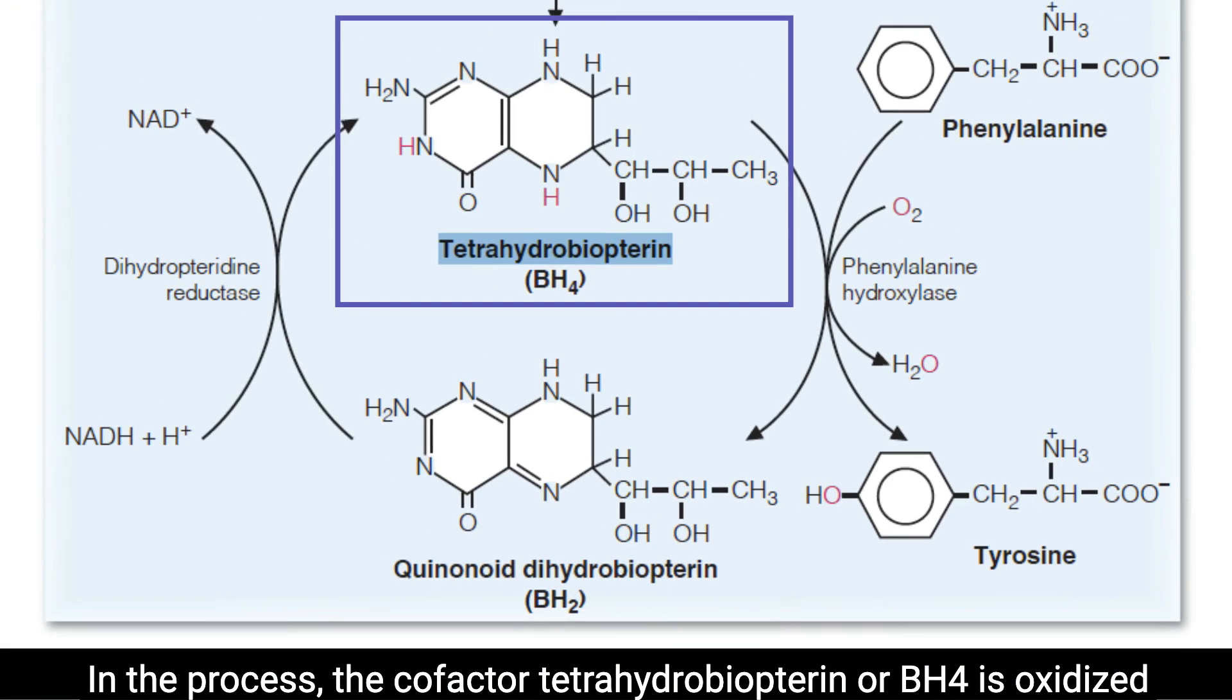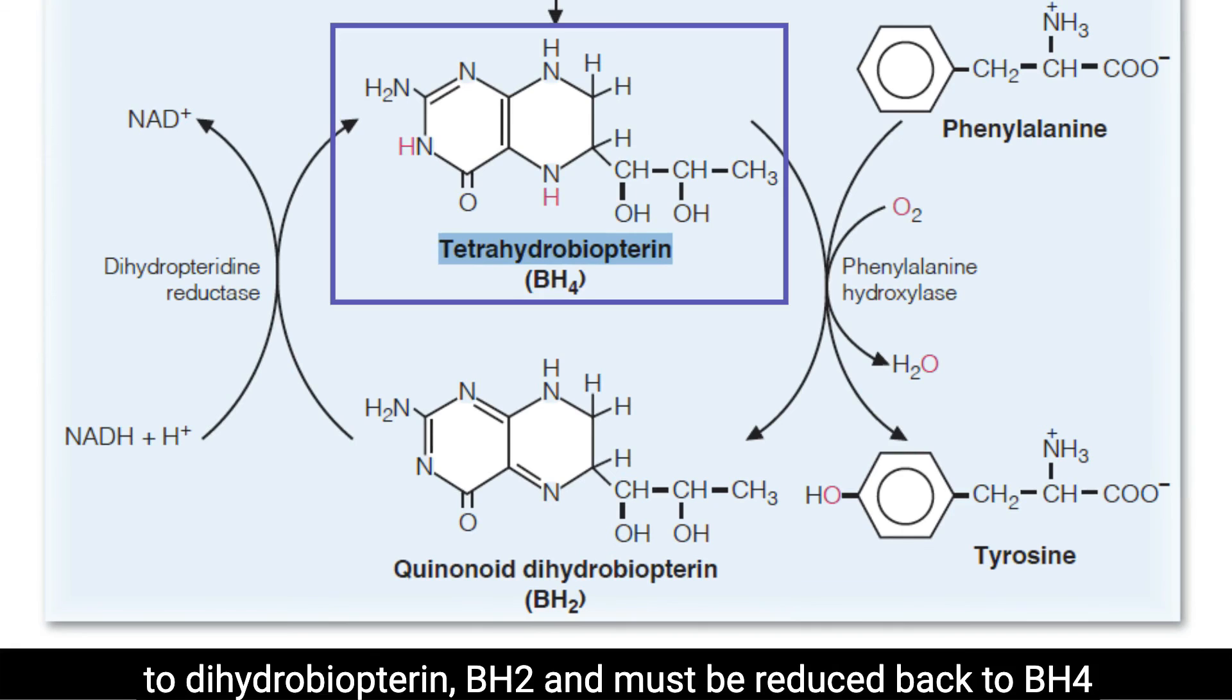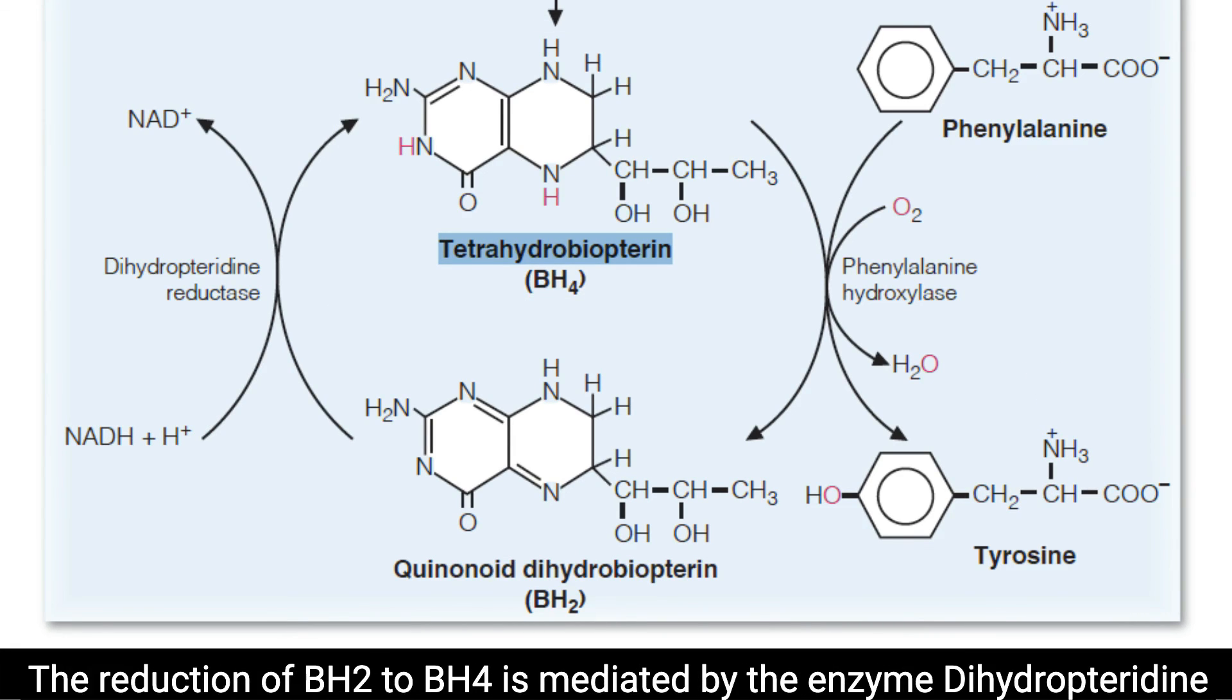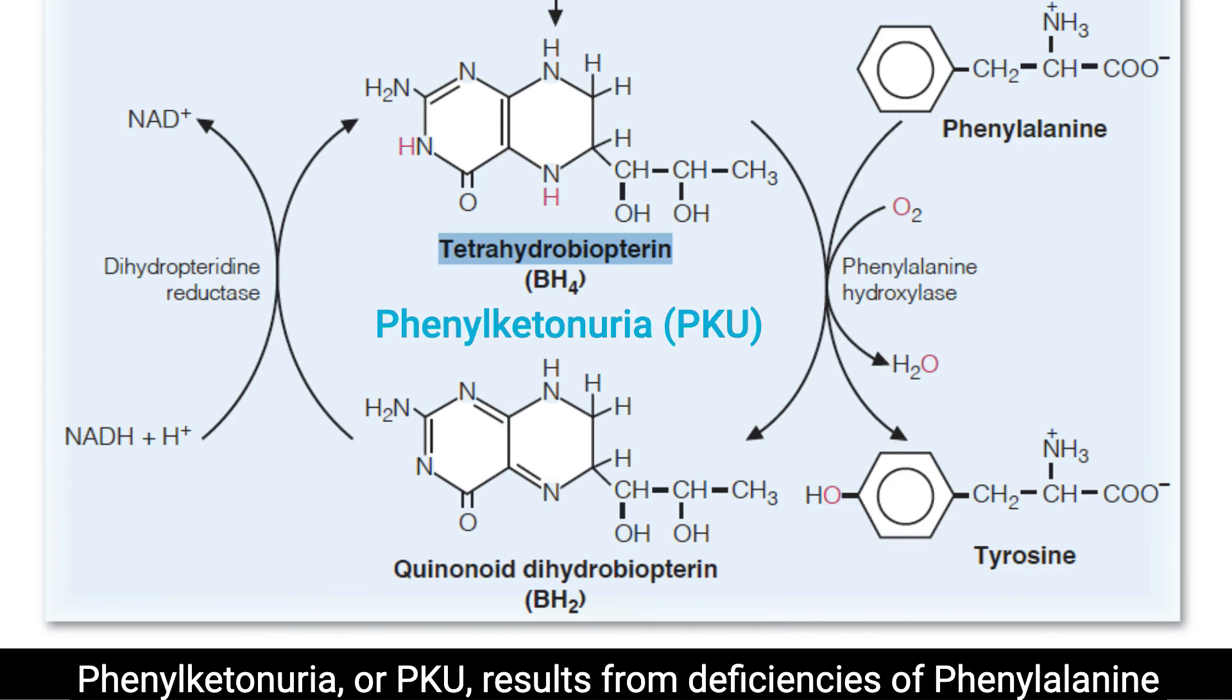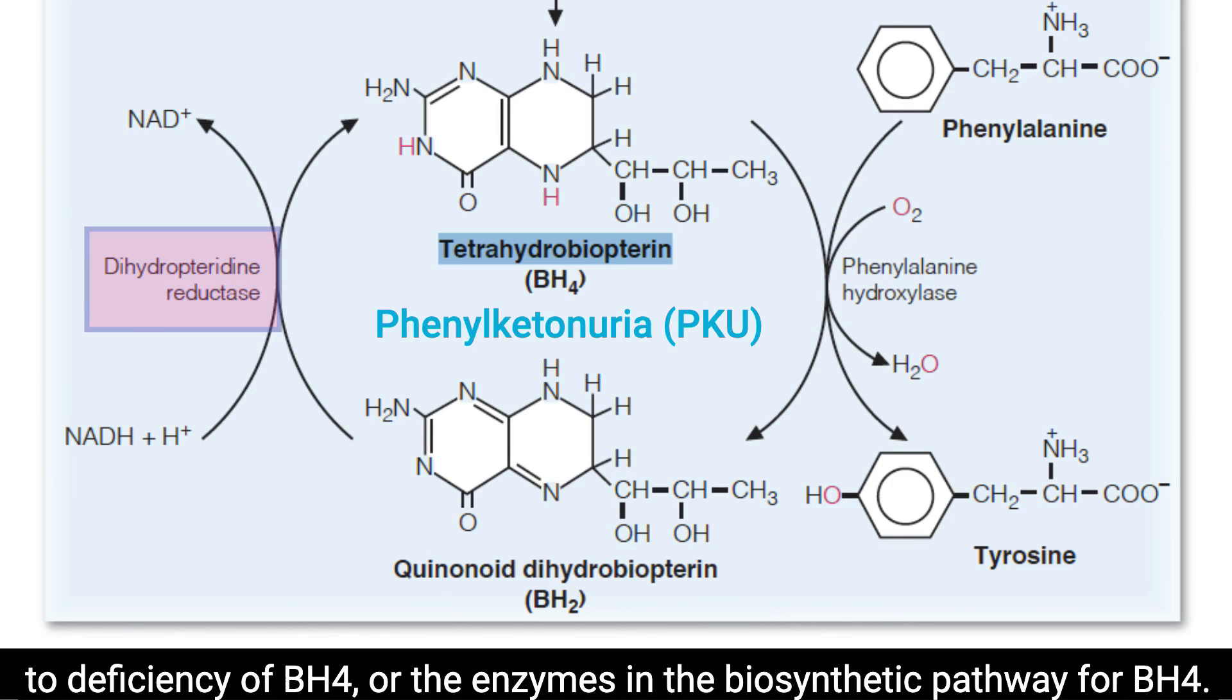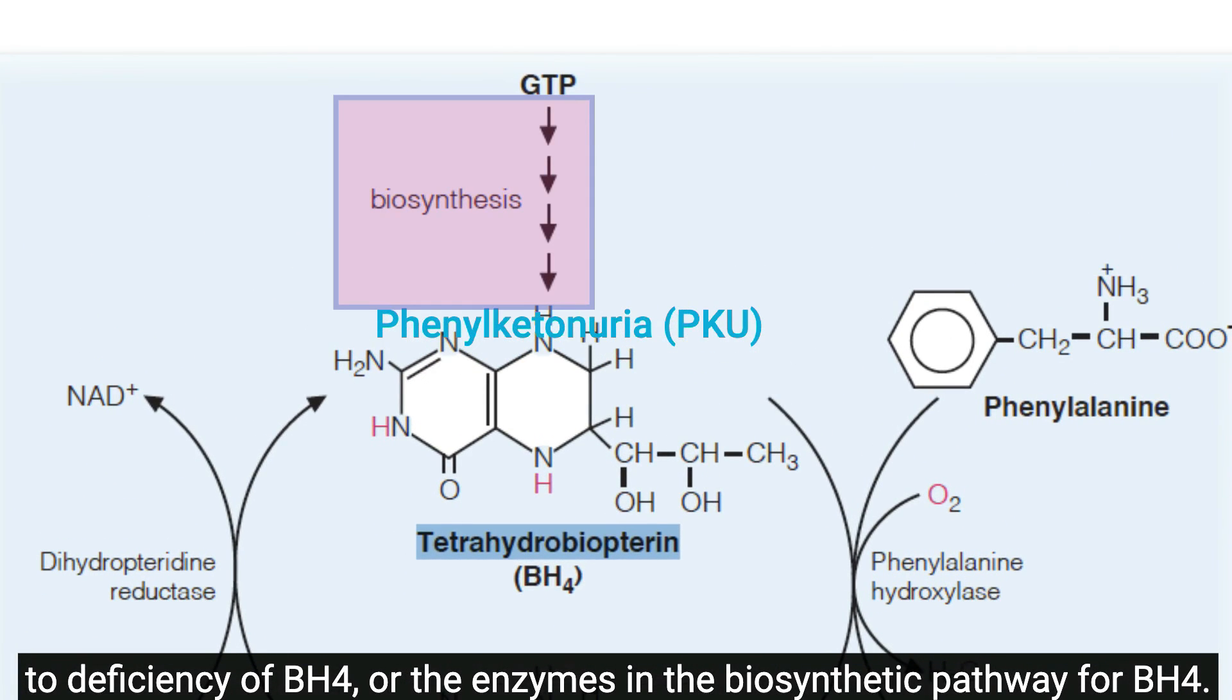In the process, the cofactor tetrahydrobiopterin or BH4 is oxidized to dihydrobiopterin, BH2, and must be reduced back to BH4 for phenylalanine hydroxylase to continue forming tyrosine. The reduction of BH2 to BH4 is mediated by the enzyme dihydropterin reductase with the reduced NADH as source of reducing equivalents. Phenylketonuria, or PKU, results from deficiencies of phenylalanine hydroxylase, known as the classic form, dihydropterin reductase leading to deficiency of BH4, or the enzymes in the biosynthetic pathway for BH4. The deficiencies of the latter two result in the other types of PKU.